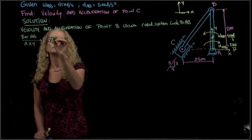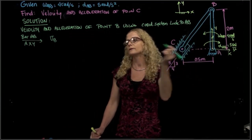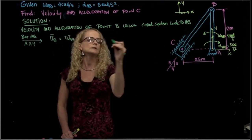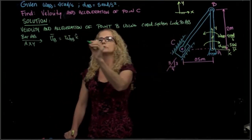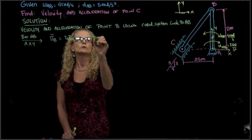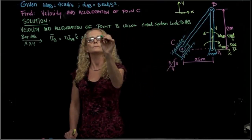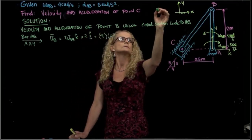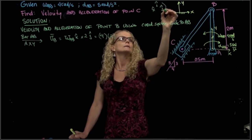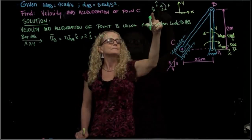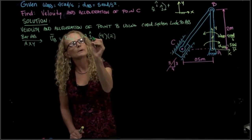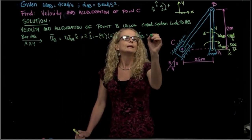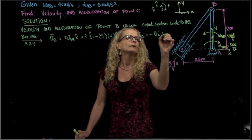I'm going to find the velocity of B. Since A is fixed, the velocity of B will be only the angular velocity AB in K cross that distance, which is 2 in J. This velocity is known, which is 4. So 4 times 2, K times J — and since K times J gives negative I — so finally, velocity of B equals negative 8i meters per second.